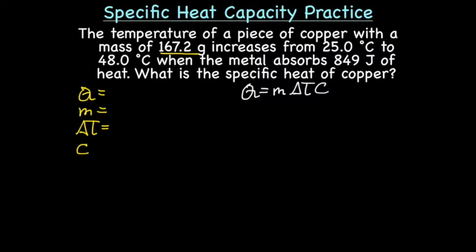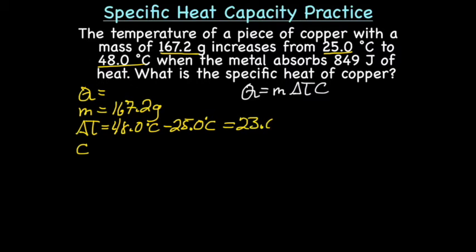We know that it is 167.2 grams, which is our mass. We know that the temperature changes. It starts at 25 degrees Celsius and ends up at 48 degrees Celsius. So, our delta T is 48 degrees Celsius minus 25 degrees Celsius, giving us a mass of 23 degrees Celsius.